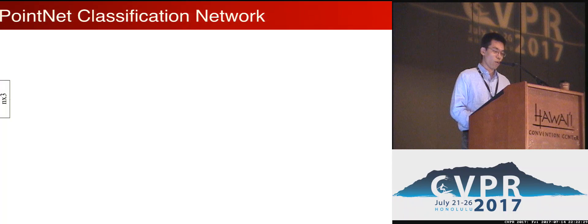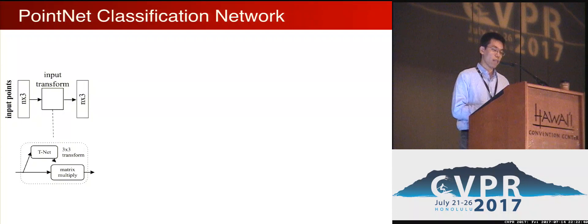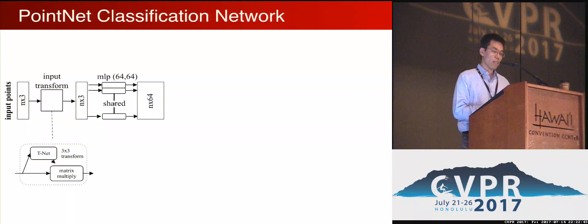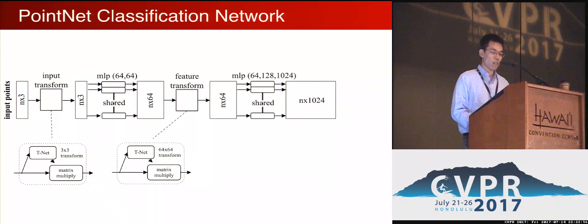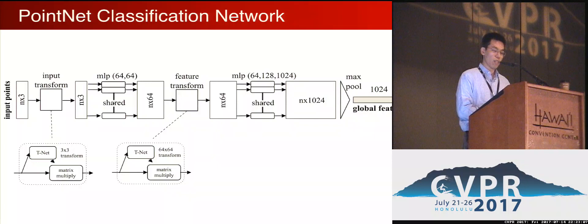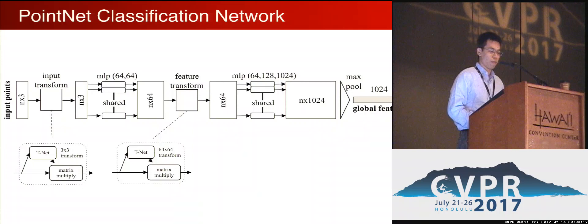Here we show how transformer networks can be combined to build our final PointNet architecture for classification. At the very beginning, we have a point cloud with points of XYZ coordinates. The input points are first transformed by an input transformer network. Then each point is embedded by a multilayer perceptron to a 64-dimensional embedding space. Then a feature transformer is applied. Then each point is again transformed into another embedding space, which is 1024-dimensional. Then max pooling aggregates all points in the high-dimensional embedding space to output a global feature vector, which is then used to output k scores for k candidate categories for classification.